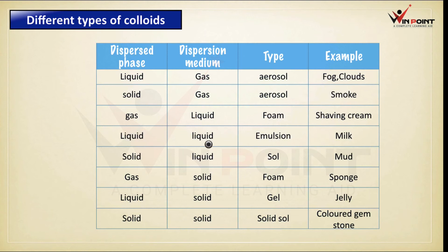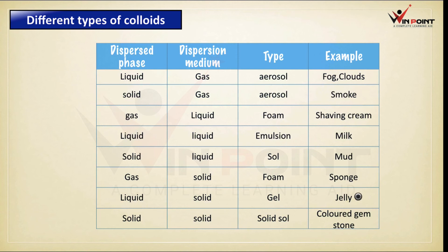Liquid in liquid colloid is called an emulsion — example is milk. Solid in liquid colloid is called a sol — example is mud. Gas in solid colloid is called foam — example is sponge. Liquid in solid colloid is called a gel — example is jelly. Solid in solid colloid is called a solid sol — example is colored gemstone.